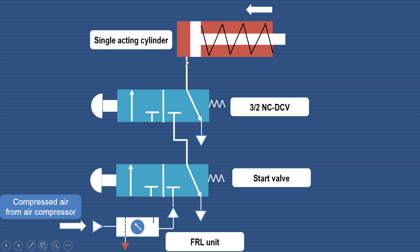The air from this side will enter through this port and be exhausted to the atmosphere. When the push buttons of both valves are operated, we get the left envelope mode in operation. In this left envelope mode, the two valves get connected with each other, air is admitted on this side of the piston, and we get the forward motion.